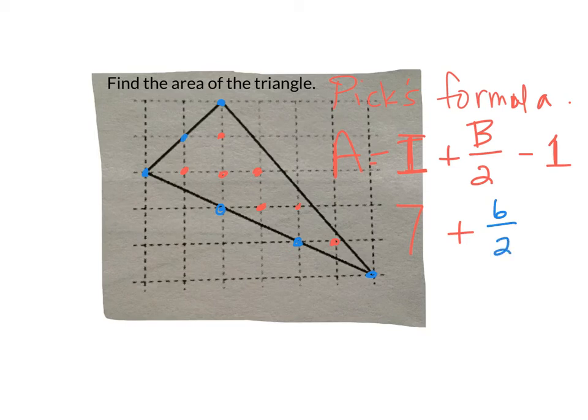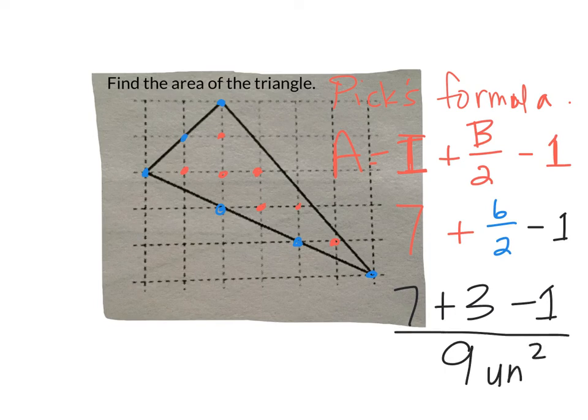We're going to take those numbers and subtract 1 from it. So 7 plus 3 minus 1 gives us a total area of 9 square units.